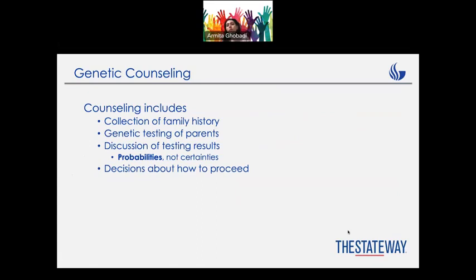You might ask why there is a discussion of test results — because the results are probabilistic, not absolute. It's not a guaranteed fact that 100% your child will have Down syndrome. The doctor might tell you the possibility is around 75%, and you can then decide whether to get pregnant or not. Even if a child is found to have Down syndrome during pregnancy, you can still decide whether to continue.